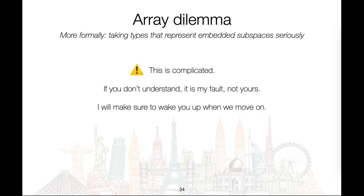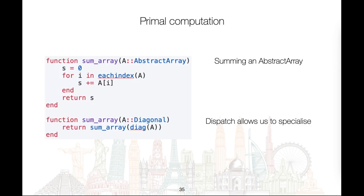Let's consider a simple example: summing the elements of an array. The fallback implementation for an AbstractArray simply loops through all the elements and adds them together. Julia allows us to dispatch this function on more specific types. For a diagonal matrix, we know we just have to sum the elements on the diagonal because all off-diagonal elements are zero. This specialization allows us to be more efficient.